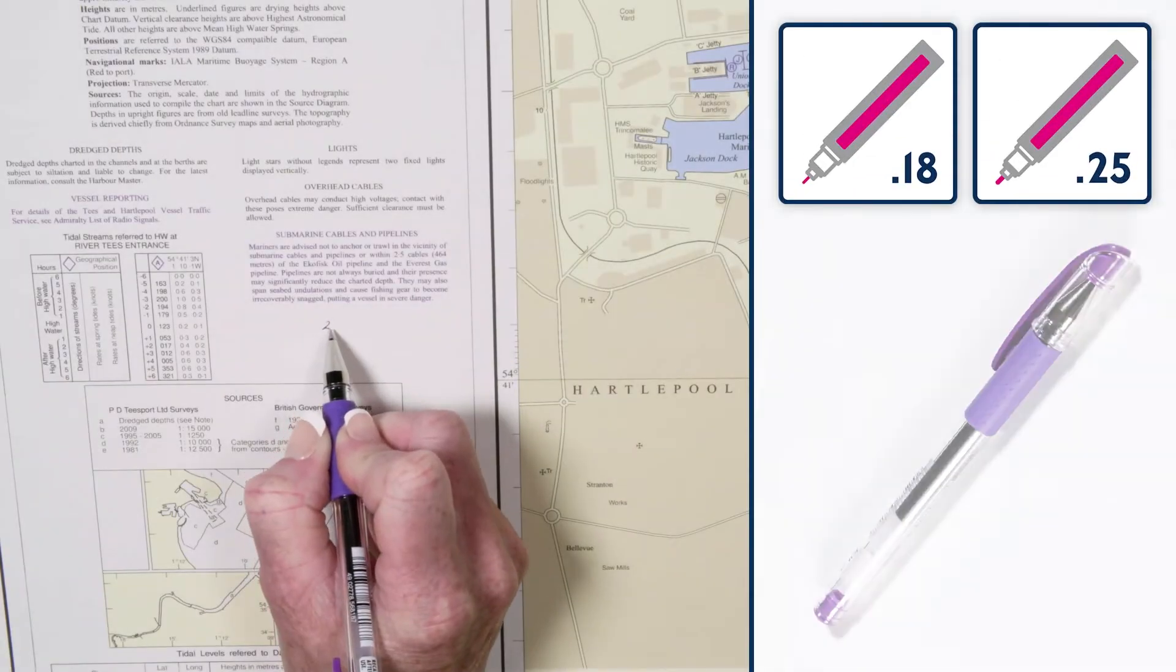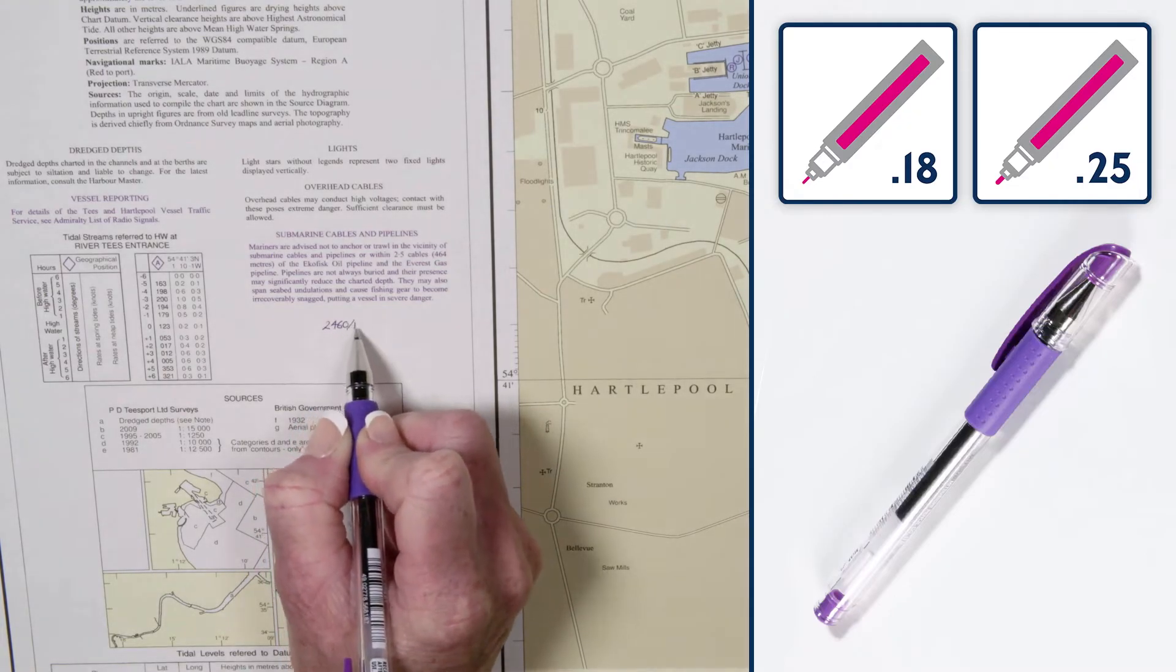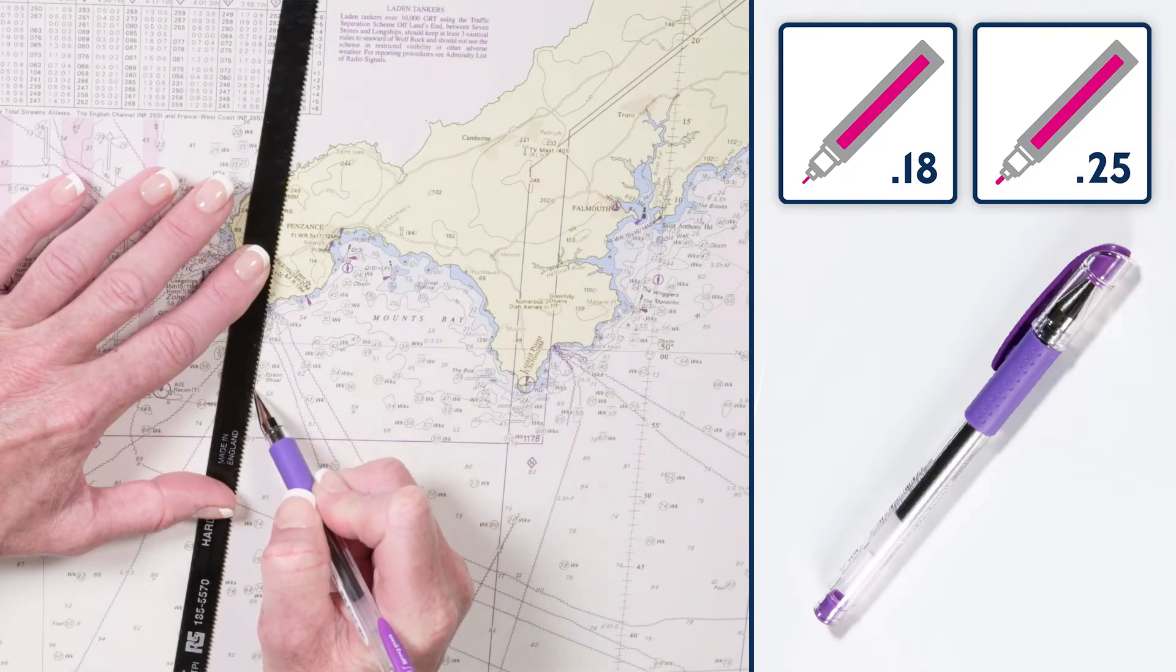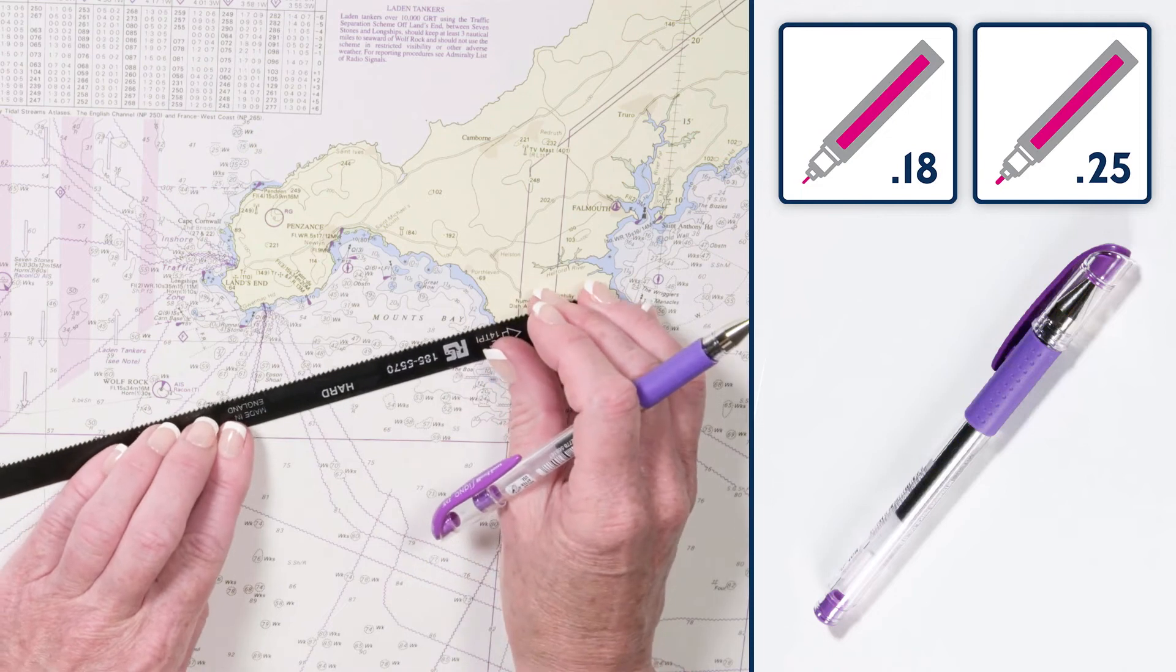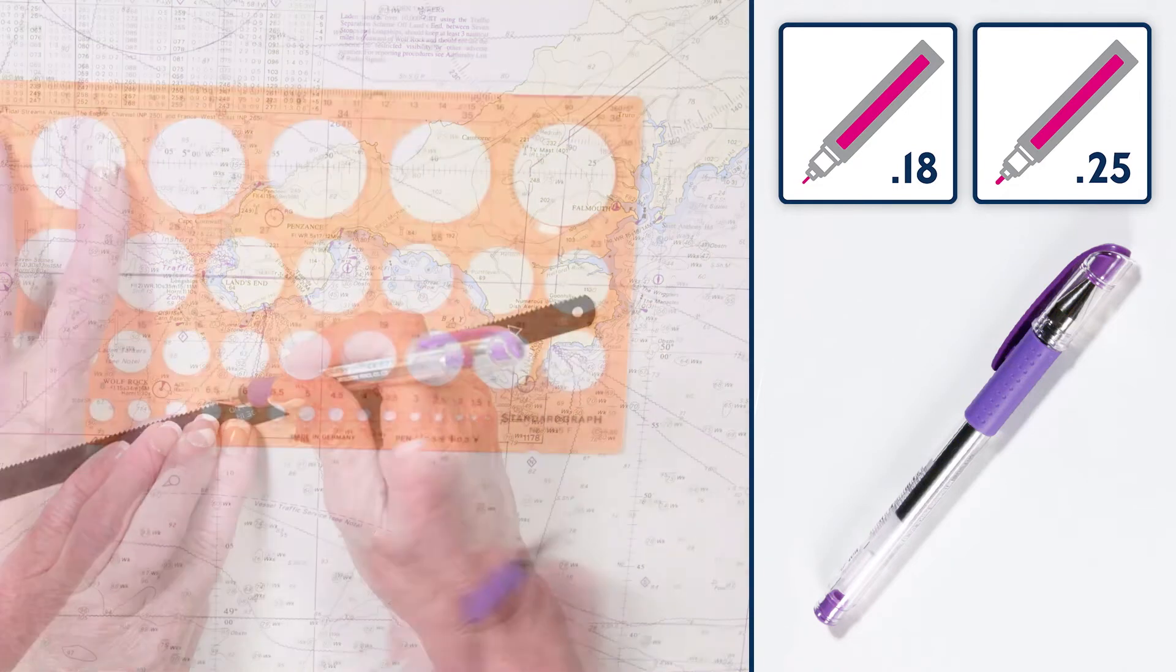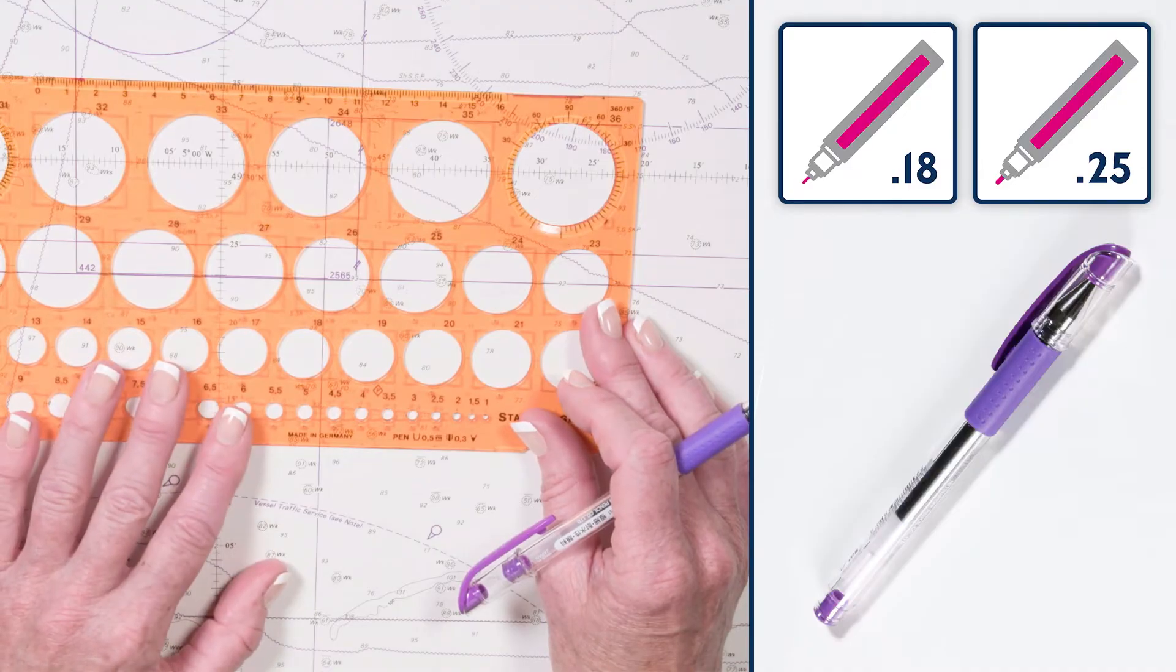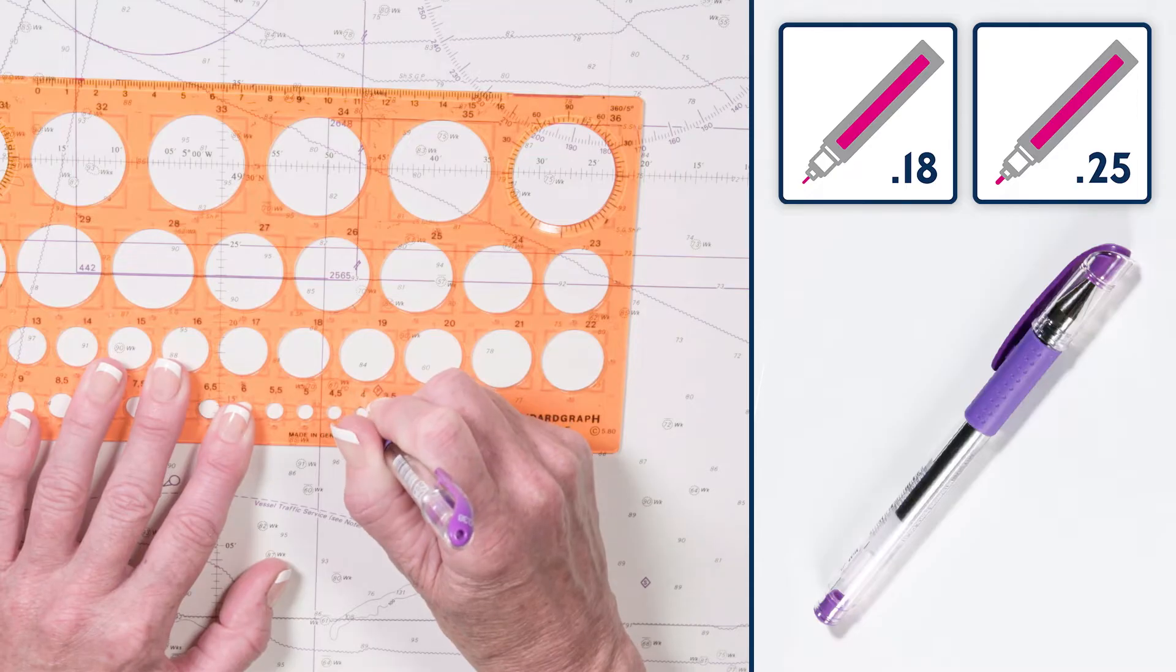We recommend using a lightfast, waterproof, permanent pen when making updates. A 0.25 nib is suitable for deletions or other updates, such as inserting chart limits. A 0.18 nib is suitable for insertions such as light descriptions. It may also be used for some deletions.